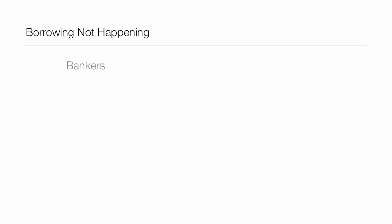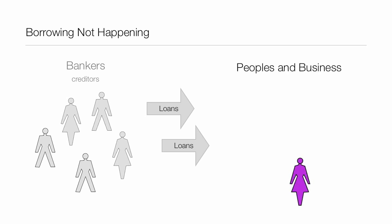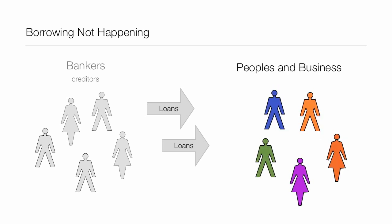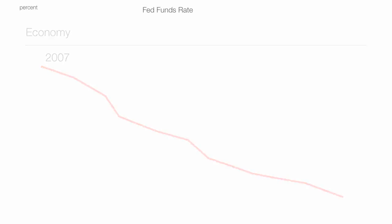Borrowing is not happening. The bankers, the creditors — these people in the gray — typically loan money to people and to businesses of all shapes and colors. So right now, loans are not happening. Businesses and other people can't get money to finance homes or finance businesses. So we see the economy start doing this — starting about 2007, it's going downhill.